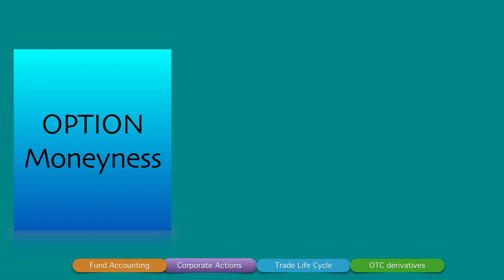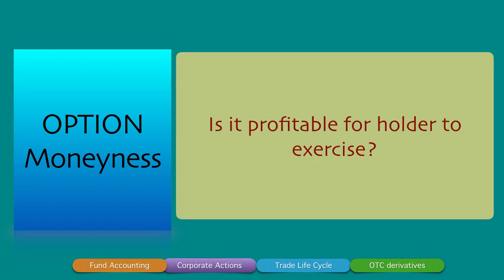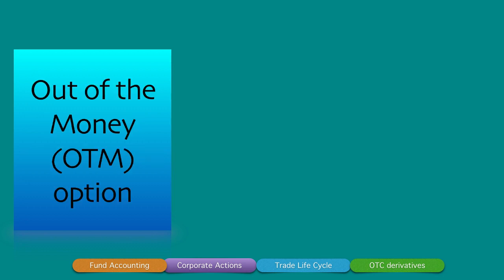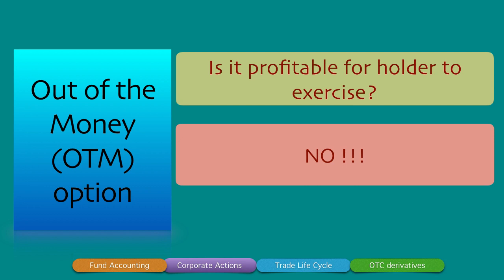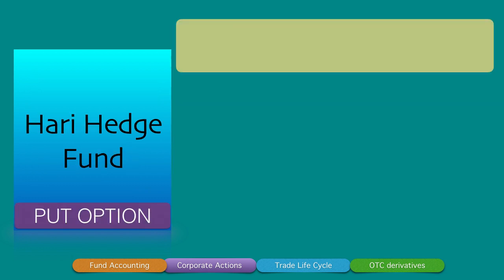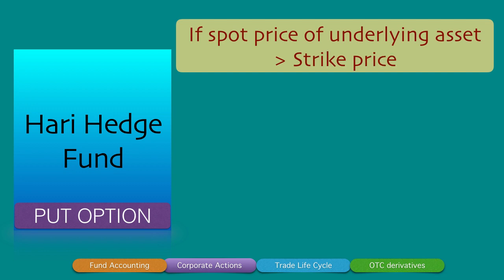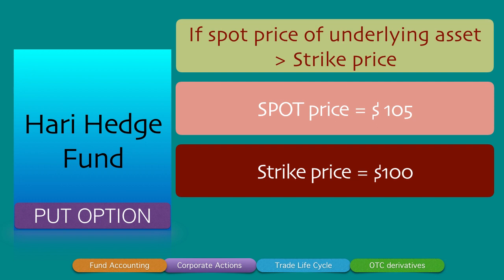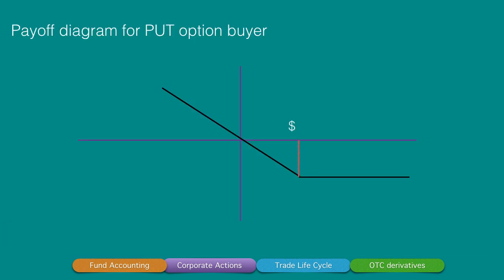For an OTM put option: if the spot price is greater than the strike price — say $105 versus a strike of $100 and breakeven of $98 — Hari Hedge Fund will allow the option to lapse. As prices rise above $100 to $103, $104 and beyond, it is unprofitable for the buyer to exercise. Such an option is called an out-of-the-money (OTM) option.